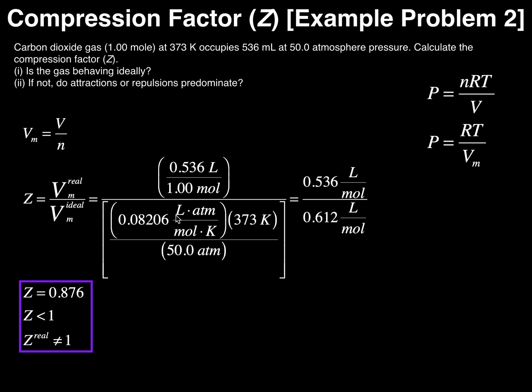So this is the correct R to use: 0.08206 liter atmospheres per mole Kelvin, times the temperature given as 373 Kelvin, and then divided by the pressure of 50.0 atmospheres, also given in this problem.